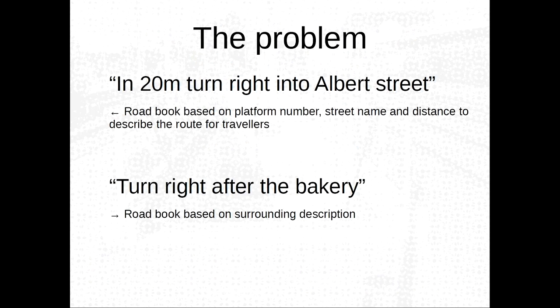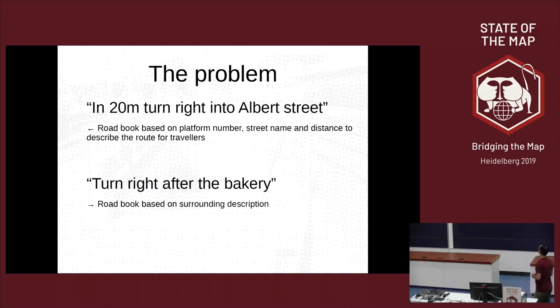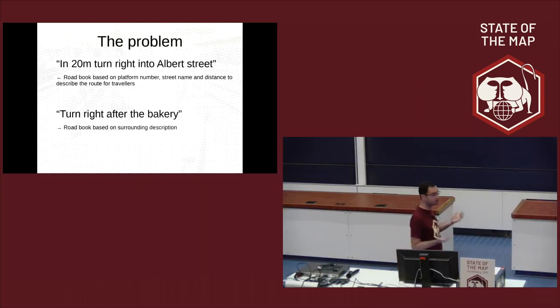What is the problem we try to solve? In routing, like car routing, there is something like in 20 meters turn right. But when you are a pedestrian in a complex area, you can't just give distance and turn right, turn left. Train stations are complex areas and you have to help the pedestrian more. So one solution is to help with descriptions like a friend or any people in the street can give you. Turn right after the bakery. It's more simple to understand and to follow.